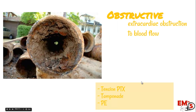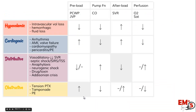Obstructive shock is probably the hardest one to remember. This is where you have an extracardiac obstruction to your blood flow. Your heart's working fine, but it's pumping and pumping and it can't really move the blood forward. Things to think about here are a tension pneumothorax, tamponade, or a PE. You're going to see an increase in the preload because the heart can't move the blood forward, so you might see an elevated JVP, for example, and your pump function in general is going to be down.